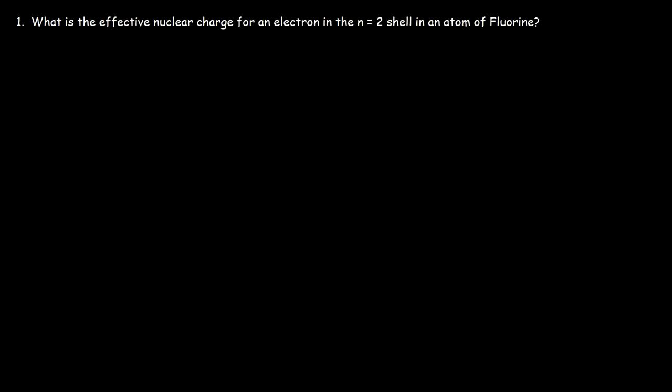The first thing we're going to do is draw a picture. Hopefully you have a periodic table with you. You want to determine the atomic number of fluorine. The atomic number of fluorine is 9, so this tells us that fluorine has 9 protons in its nucleus.